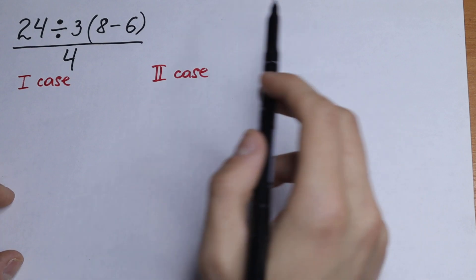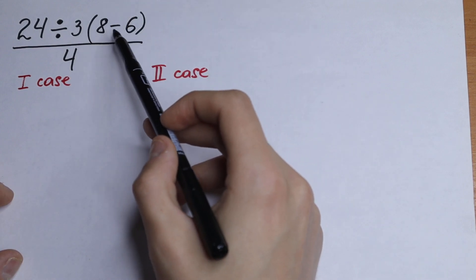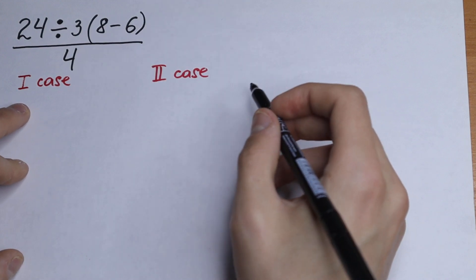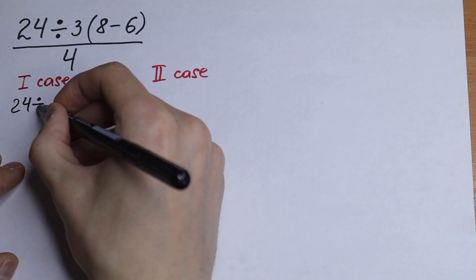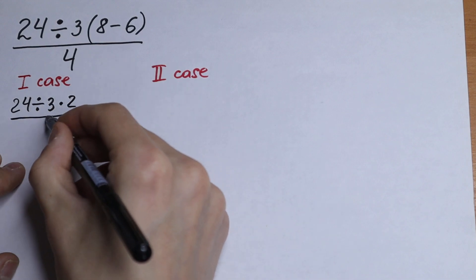So how can you solve this? We know that the first step is our parentheses. So let's subtract our 8 minus 6. It will be equal to 2. So let's write our first case. It will be equal to 24 divided by 3 times 2 over 4.